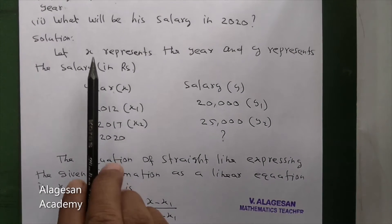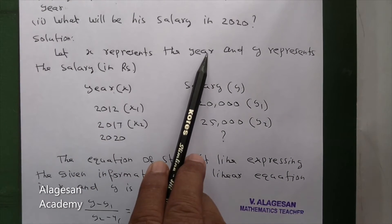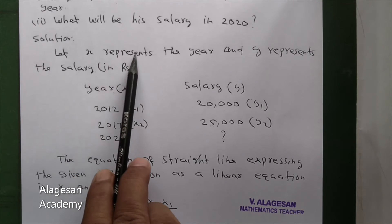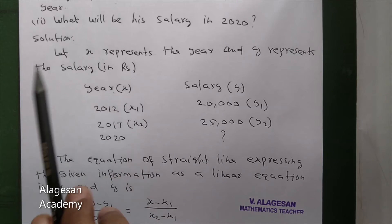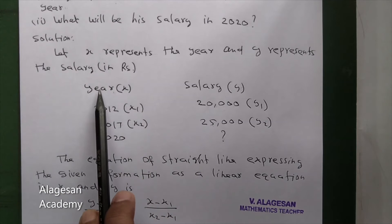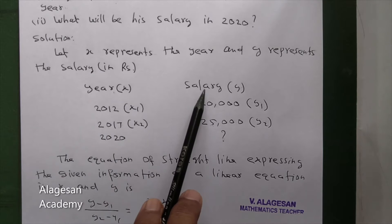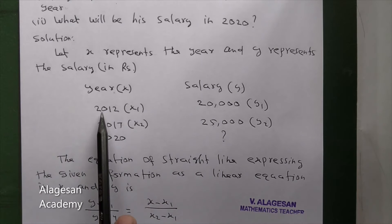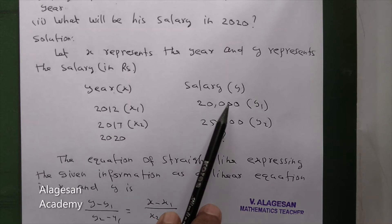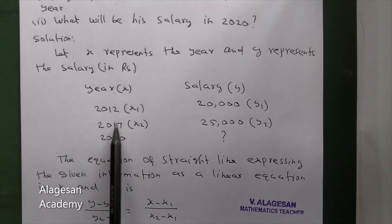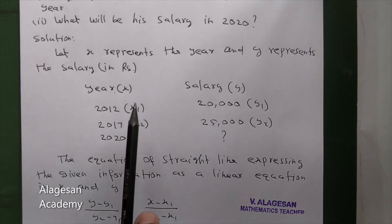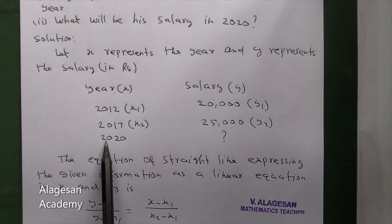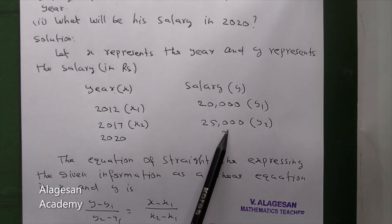Let x represents the year and y represents the salary in rupees. Year is x, salary is y. Year 2012, salary is 20,000. Year 2017, salary is 25,000. It is x1, x2. It is y1, y2. But 2020, what is the salary?